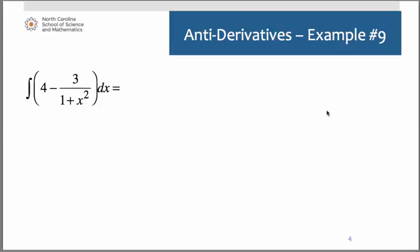And we have one last example. Antiderivative of 4 minus 3 over 1 plus x squared dx. Going term by term, antiderivative of 4 is simply 4x. For the second part, this is where you need to recognize that integrand pattern.